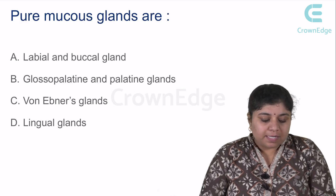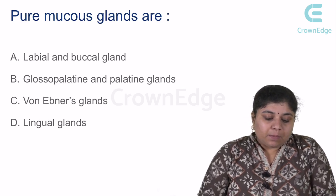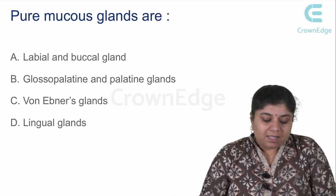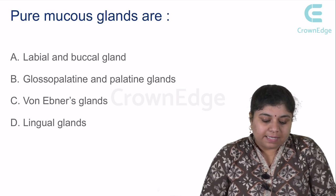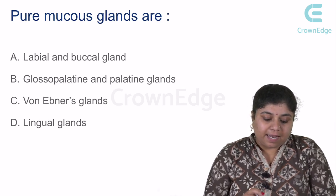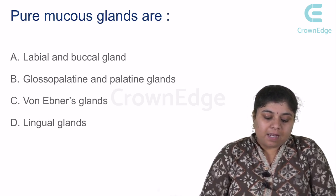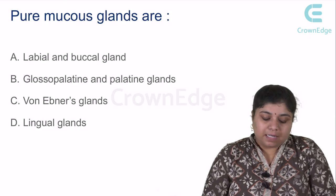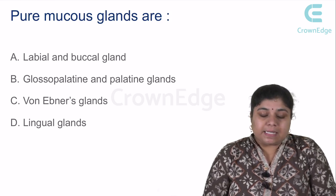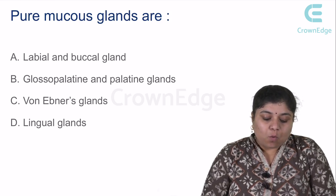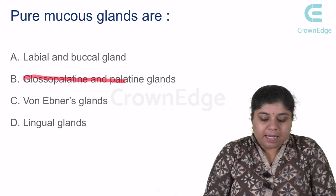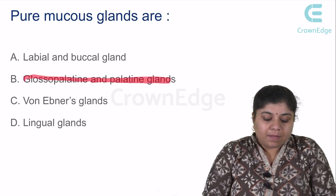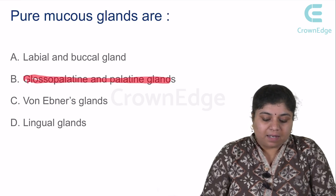Now let us see one of the questions: pure mucous salivary glands are — the options are labial and buccal gland, glossopalatine and palatine glands, von Ebner's glands and lingual glands. The answer would be glossopalatine and palatine salivary glands.